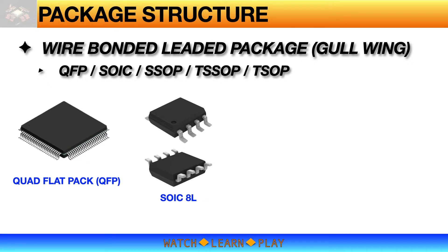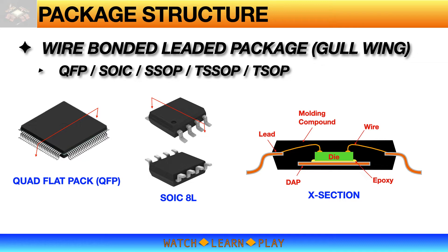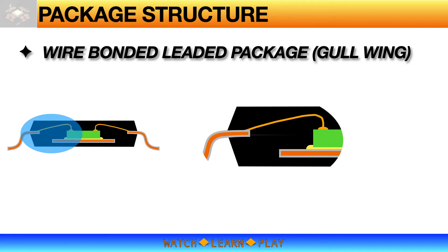Let's start with the common wire-bonded lidded packages — these are the ones that have leads extending out on the sides, like gull-wing. If you have seen a printed circuit board populated with components, it is very likely that there's at least one component of this type. These packages include QFP, which has leads on all four sides, and also SOIC and SSOP, which have leads on two sides. If we cross-section the package, slicing through the body of molding compound and through the die, there are basically five main components: die, wire, epoxy, die attach pad, leads, and molding compound.